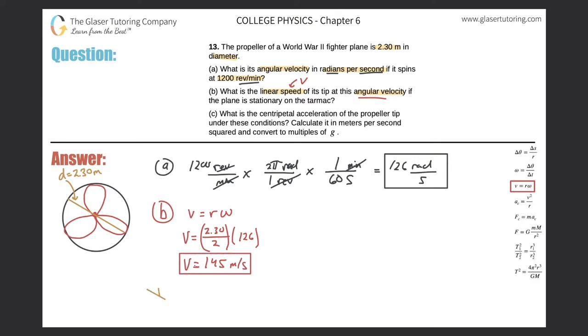Let's take a look now at letter C. Letter C says: what is the centripetal acceleration of the propeller tip under these conditions, calculated in meters per second squared and g?